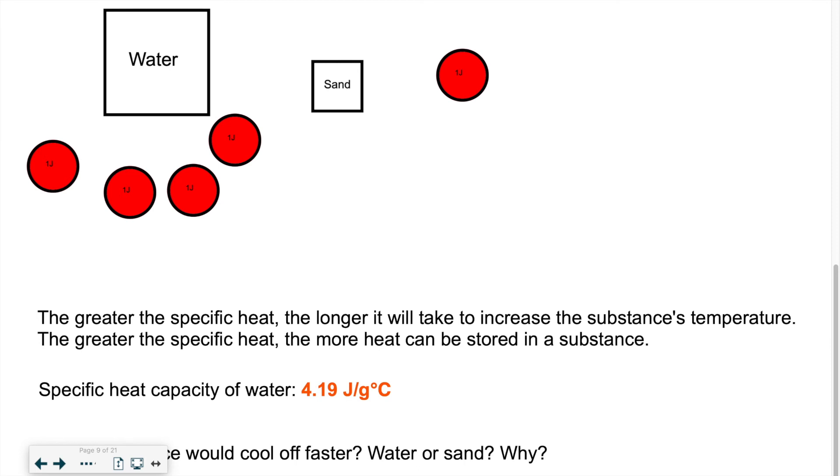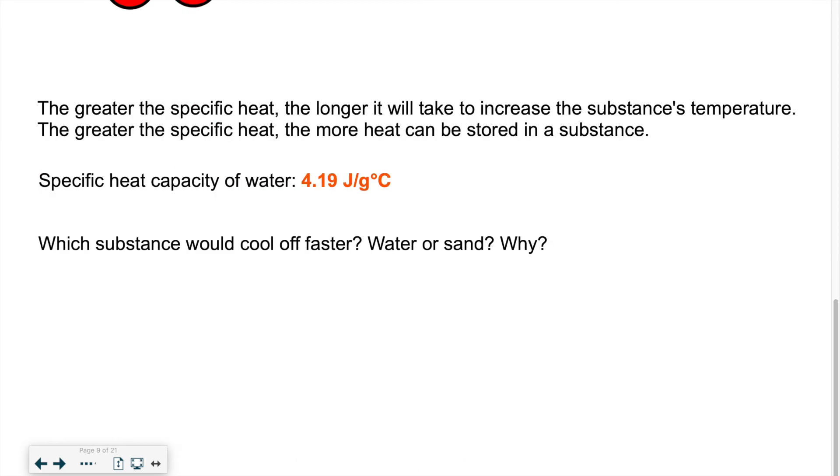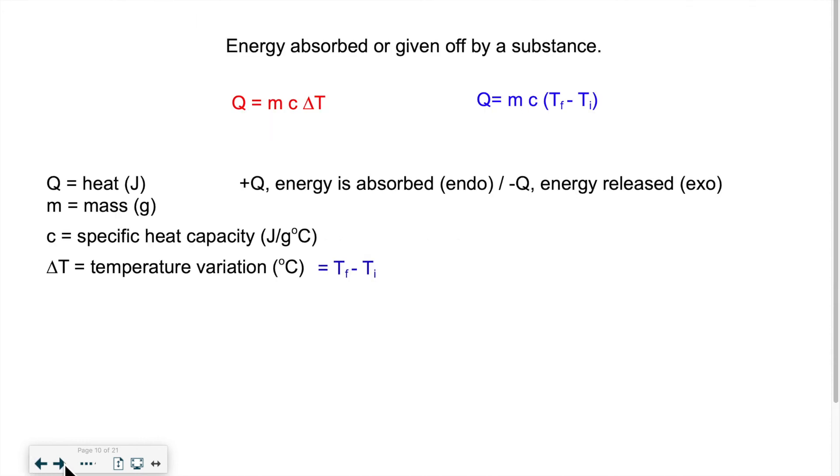Now, there is a value that you need to know by heart. This is a little bit like knowing that water freezes at 0 degrees Celsius and boils at 100 degrees Celsius. It's just a basic point of knowledge. So the specific heat capacity of water is 4.19 joules per gram degree Celsius. You should know this value by heart. Now, I had a follow-up question, but I've already addressed this. Which substance would cool off faster, water or sand and why? We just said it's sand because the value of the specific heat capacity is smaller. And smaller means it heats up faster, it cools off faster, because it contains less energy. It's easier to give away that energy at the end of the day.